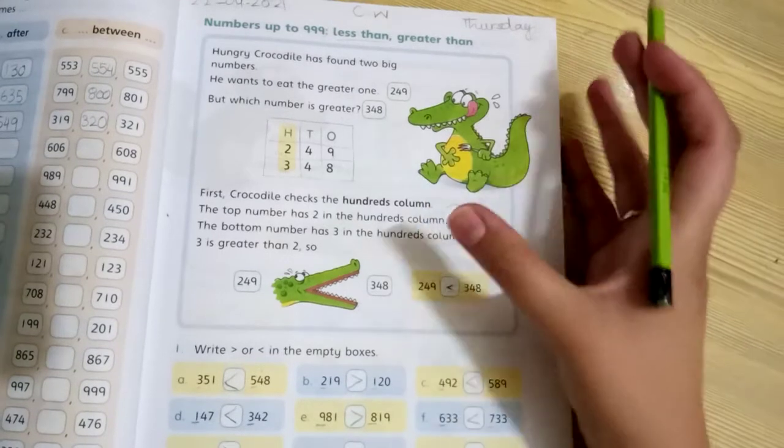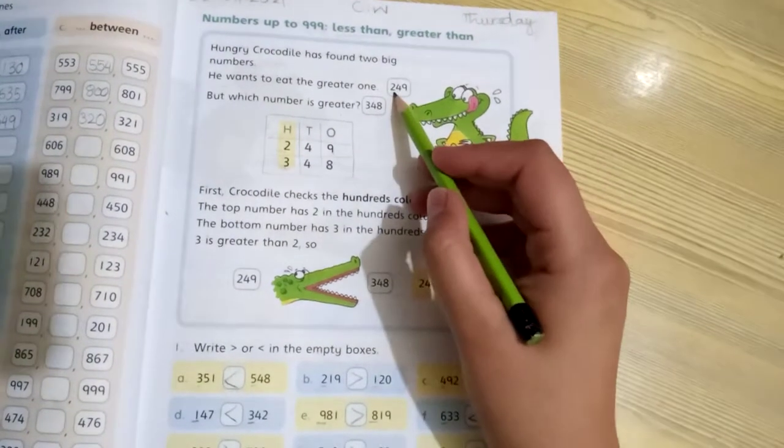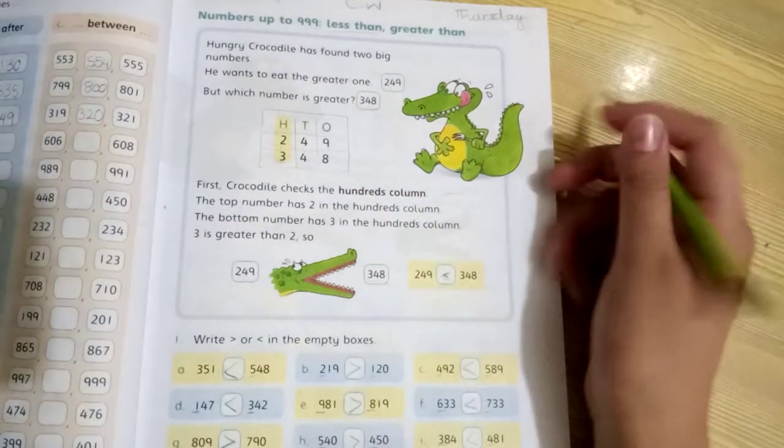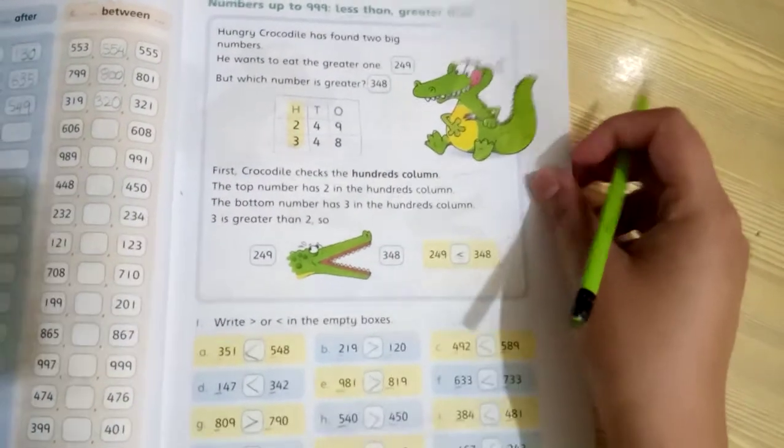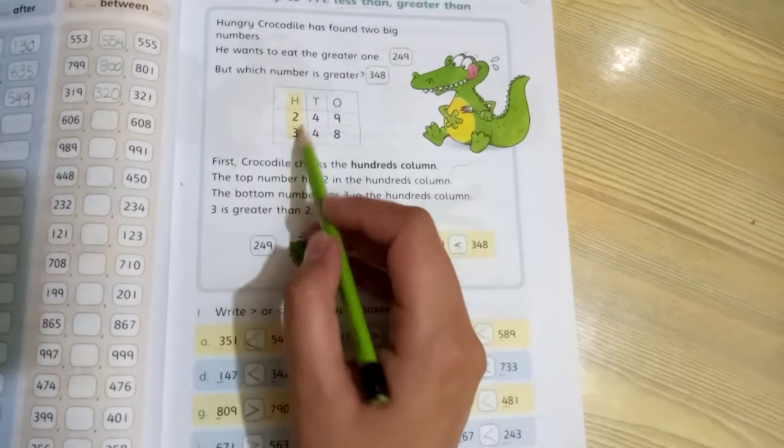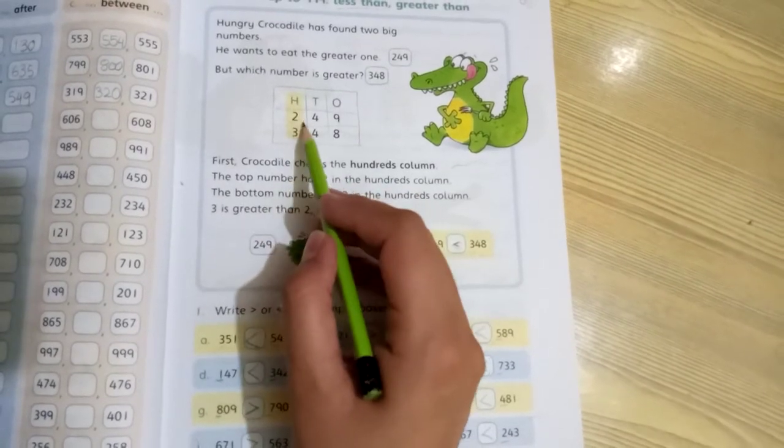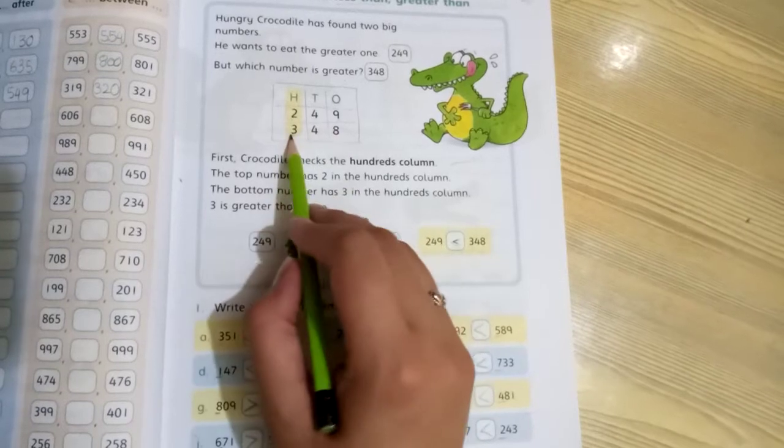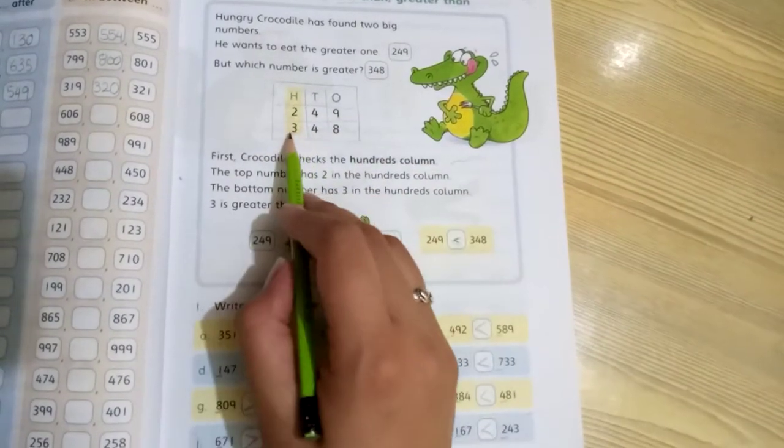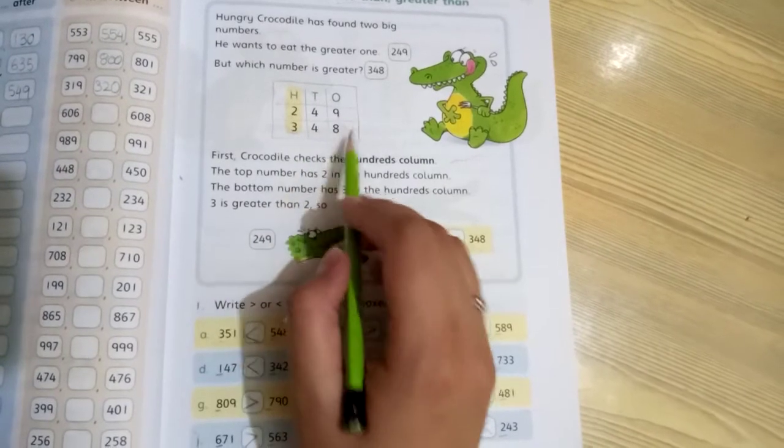He is going to eat the number that is greater because he is hungry. Here is the number: 249 and 348. When you are going to compare the numbers, you will look at the first two numbers. This is the first number 2, this is 3. Which is greater? 3 is greater.